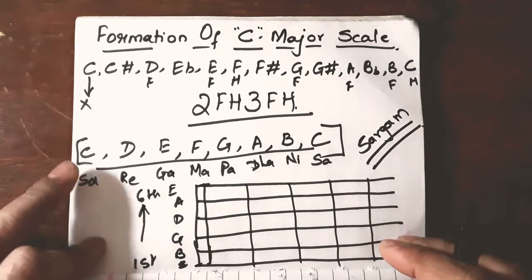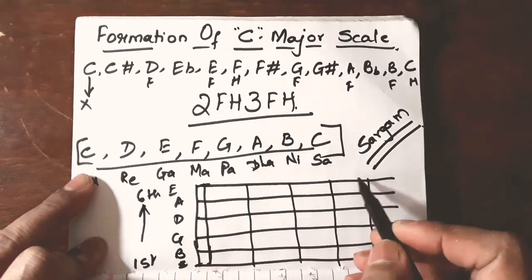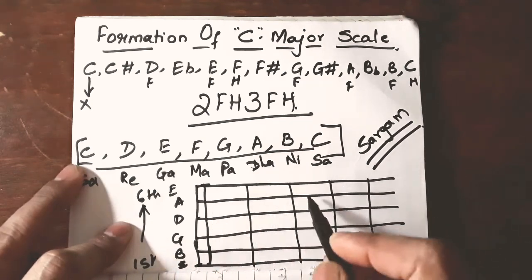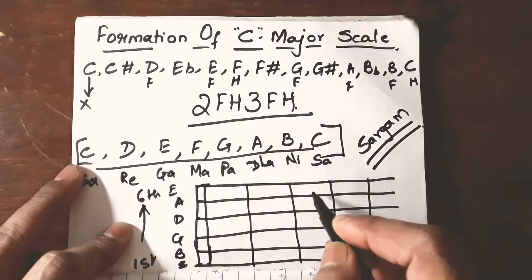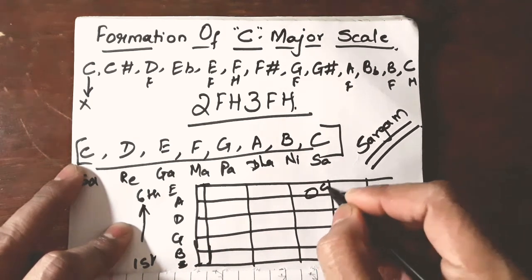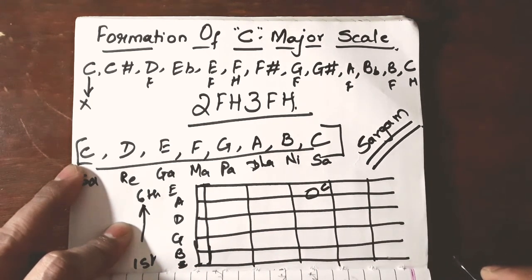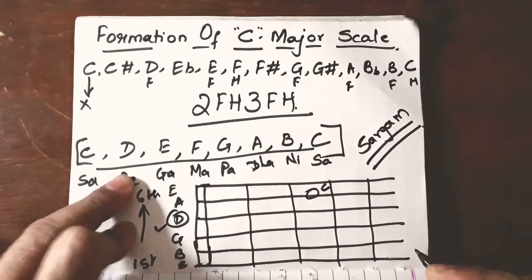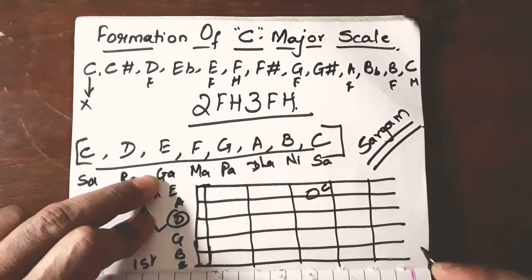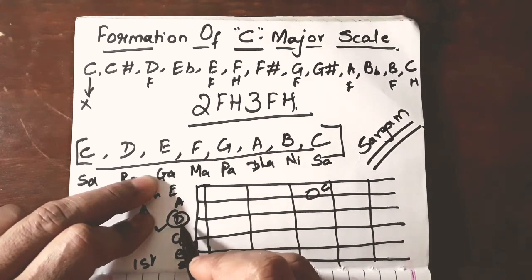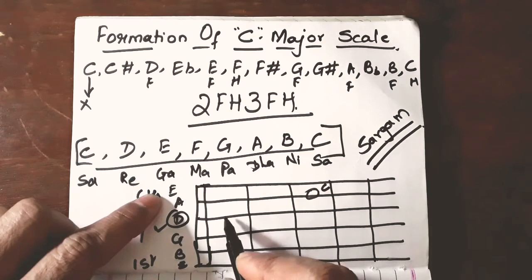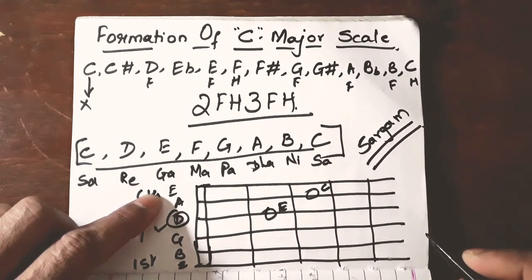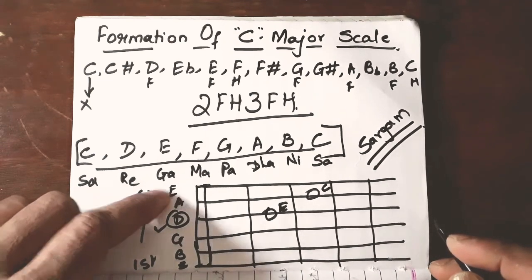So, let us find out C in the 6th string in the 6th string there is no C note. In the 5th string we have C over here, A, B flat B and C. After that it is D. So, this one, Re ok. Then Ga, D, E flat E, E right.